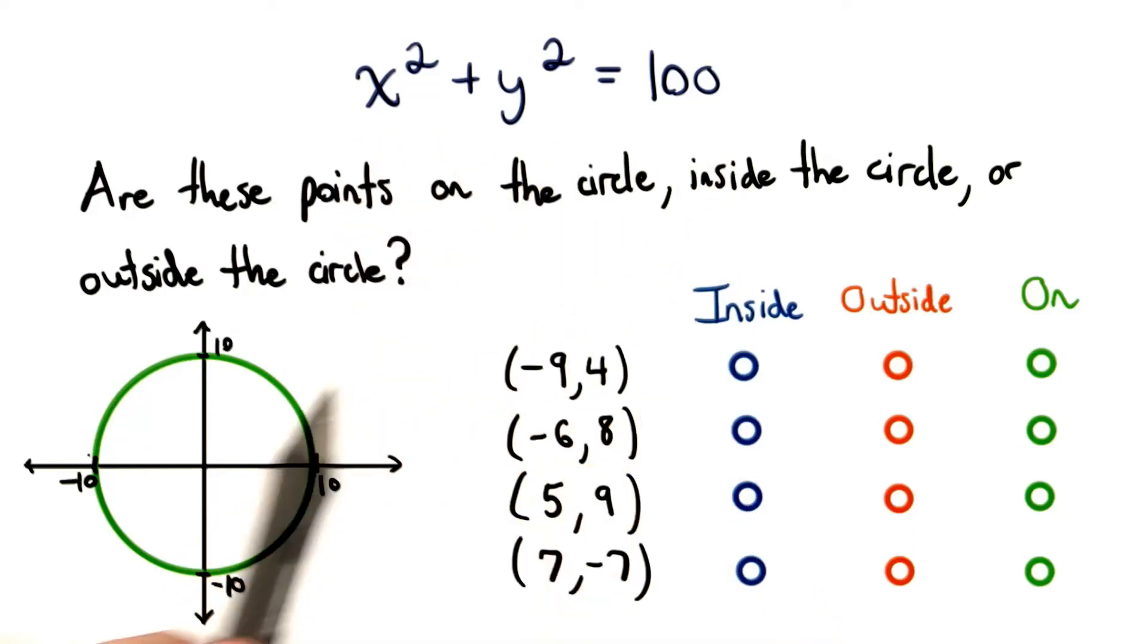We just saw that this equation was a circle with a radius of 10. So now let's consider some other points.